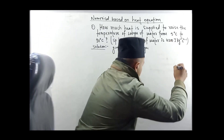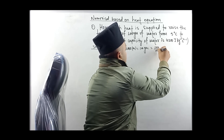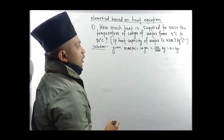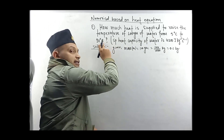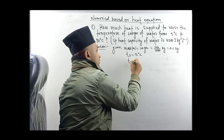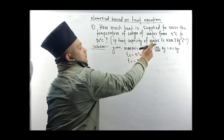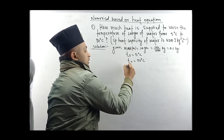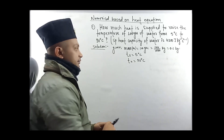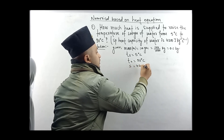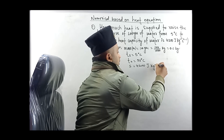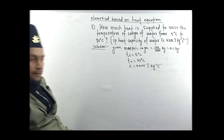In SI units, we take mass as 100 gram and convert to kg: 100 divided by 1000, which gives 0.1 kg. Temperature from 5 degree Celsius to 90 degree Celsius. The specific heat capacity of water is 4200 joule per kg per degree Celsius.